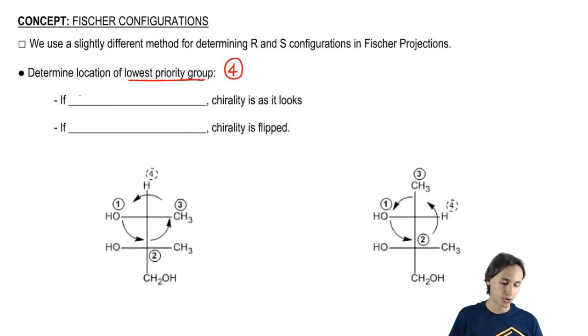If four is vertical, if four is faced vertical, then the chirality is exactly as it looks. I'm just going to go from one to three. I'm going to draw that arrow and that's going to be it.